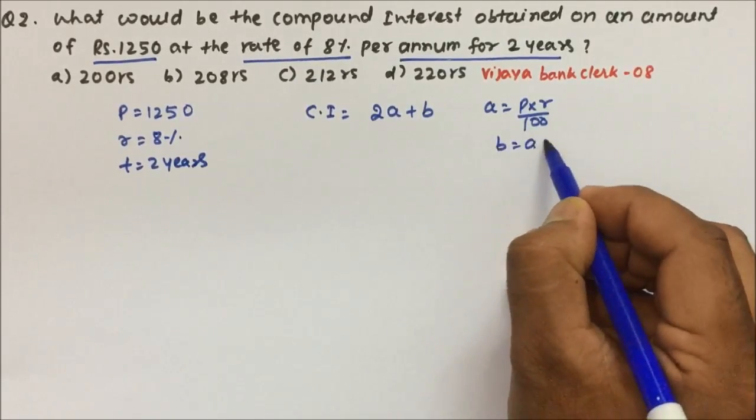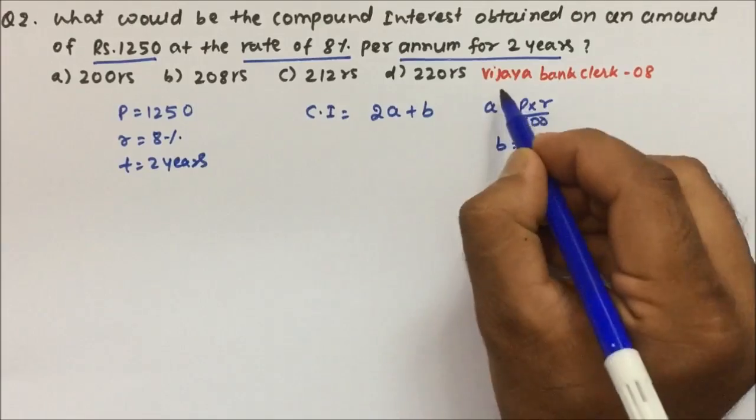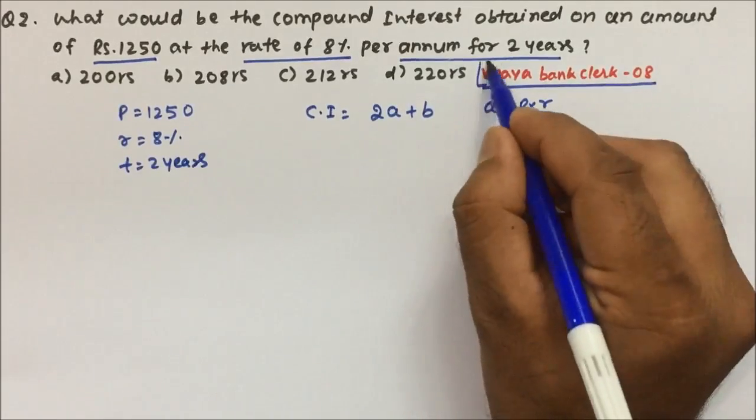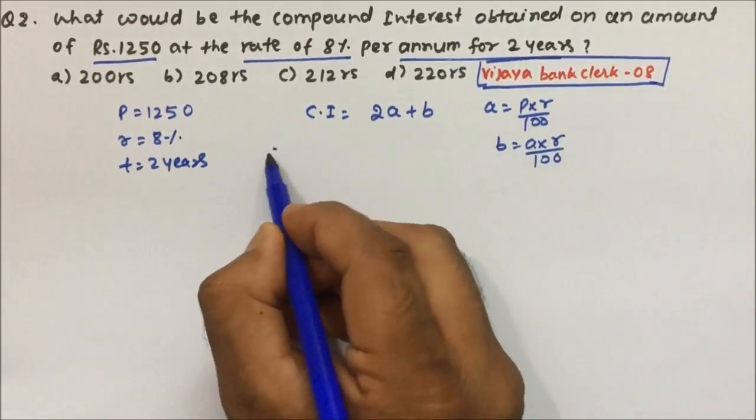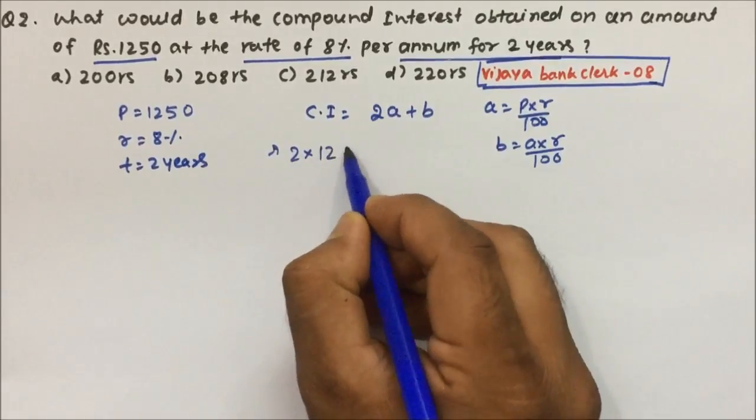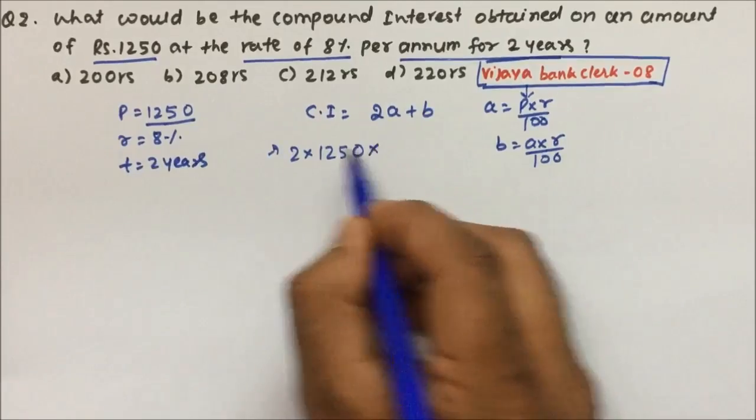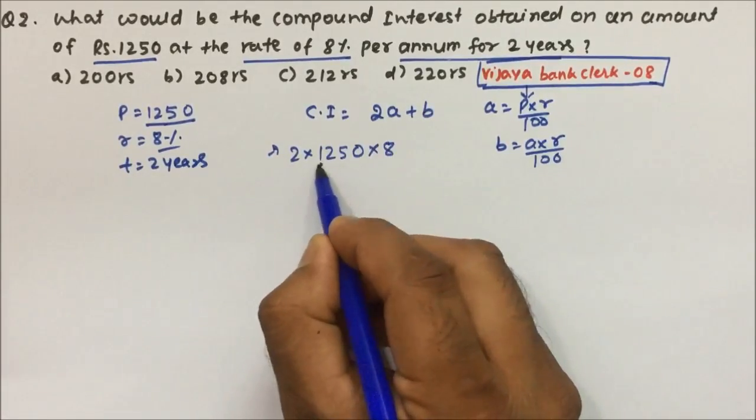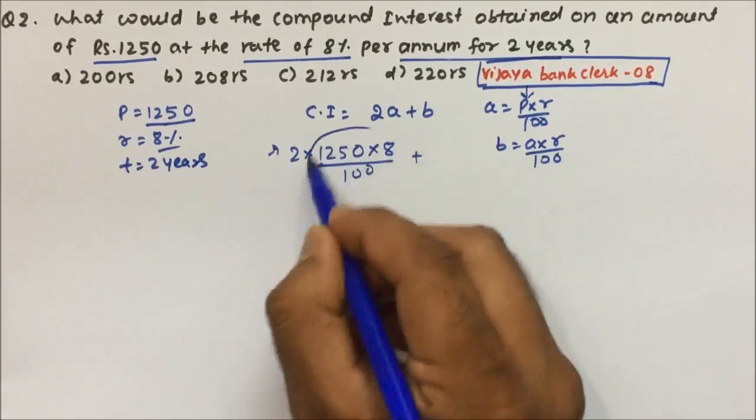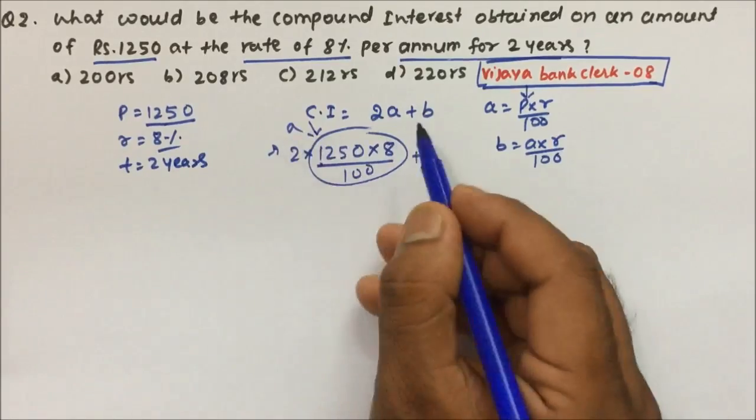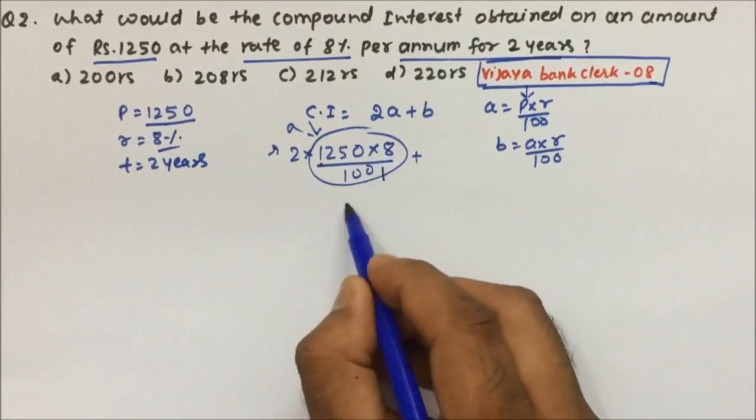If you'll see, this question is also asked in Vijaya Bank clerk 2008. Now 2a is what? 1250, I mean P is what? 1250 into R. R is what? 8, and divide by 100. We got the value of a here, P into R by 100. What is b? B is nothing but a into R. R is 8 divided by 100.